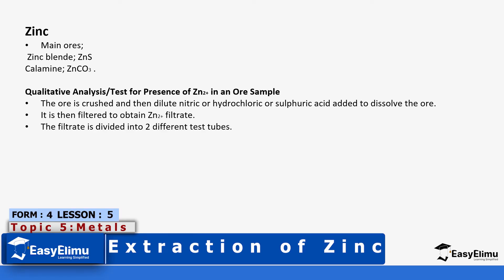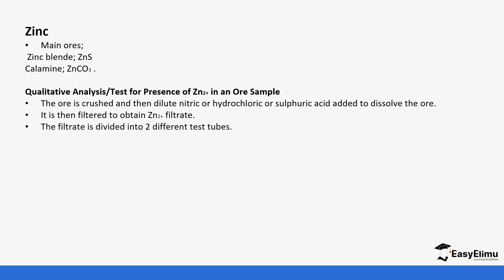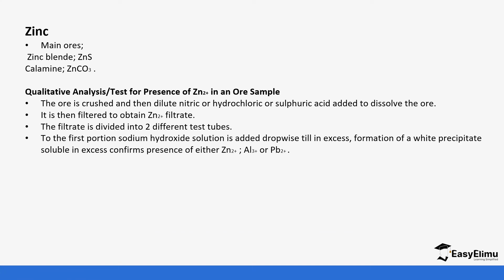This filtrate is added to two different test tubes. In test tube one, we add sodium hydroxide dropwise until excess. Zinc is unique due to its amphoteric nature — it forms a white precipitate when a few drops of sodium hydroxide are added, which then dissolves in excess.